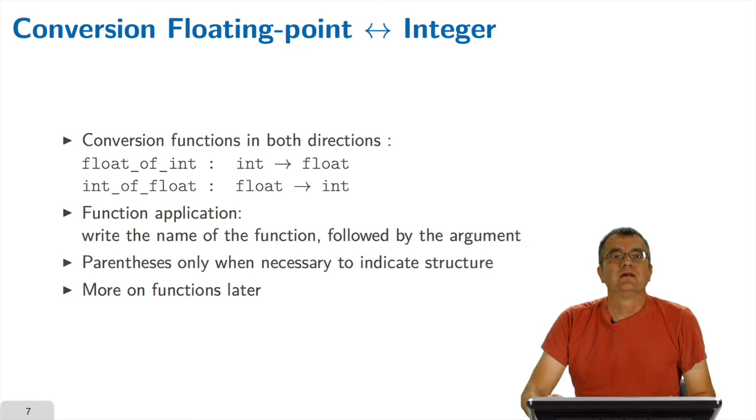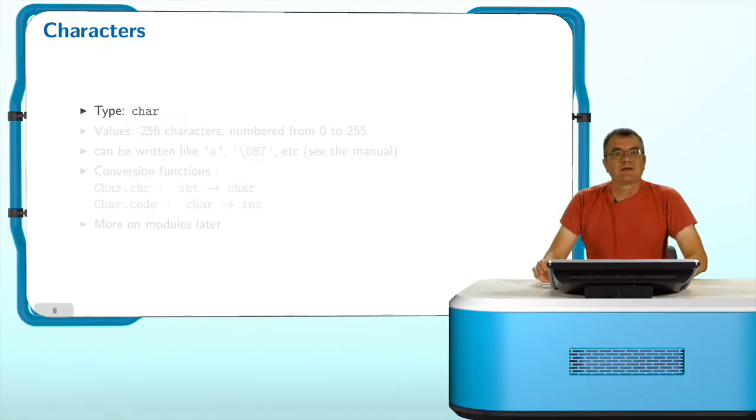Our next data type are characters written char. This type contains 256 values of type characters, the constants of which can be written either as letters inside of quotes or using various other notations like octal numbers, decimal numbers, hex numbers and so on, which you can find all in the manual.